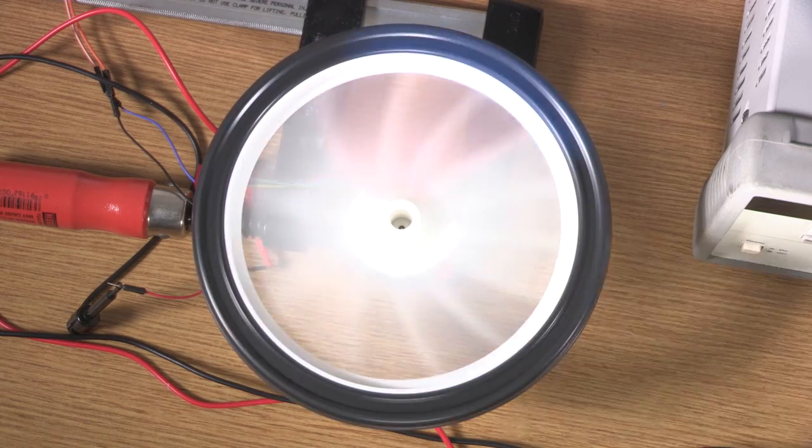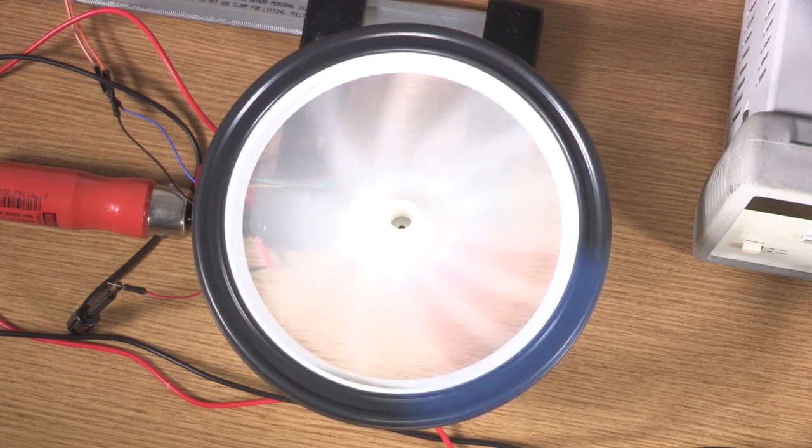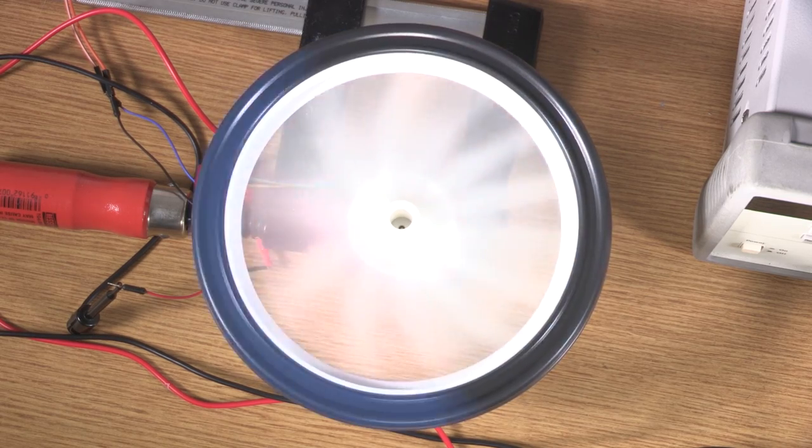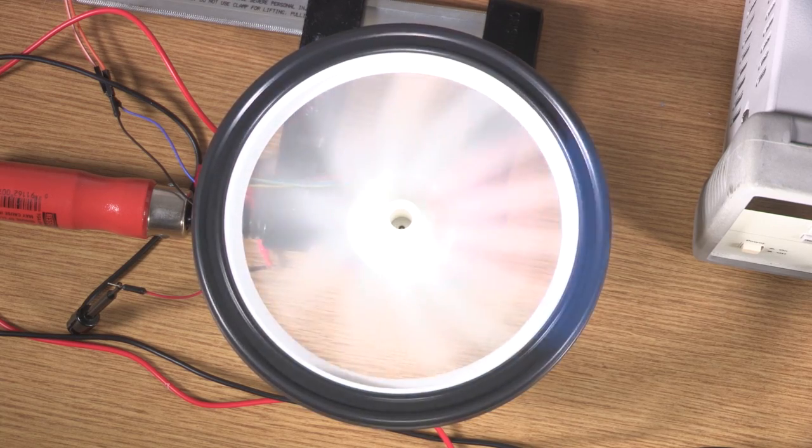Next, we cut the power and the motor will start slowing down. As it spins slower and slower, again the spokes will appear to spin clockwise and then counterclockwise.